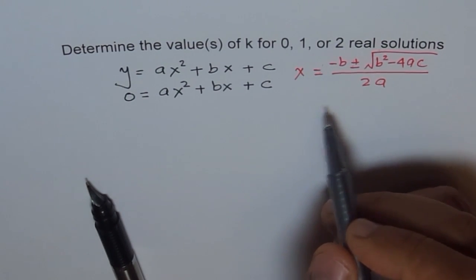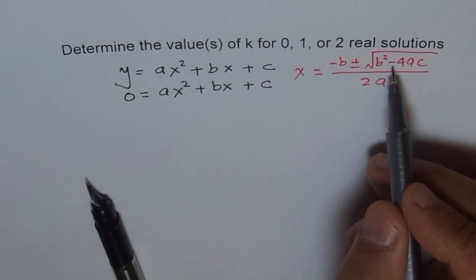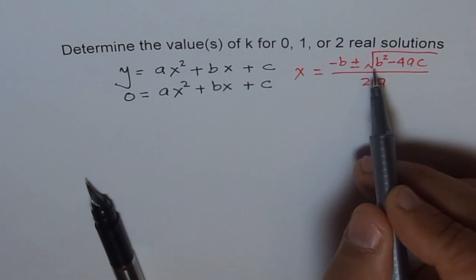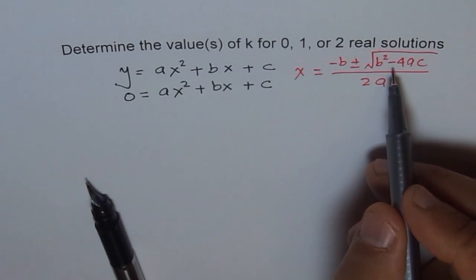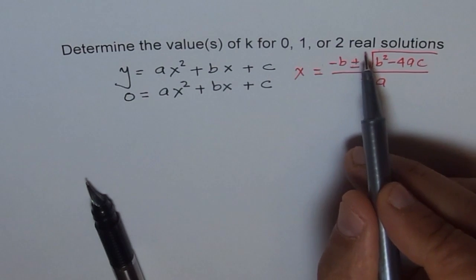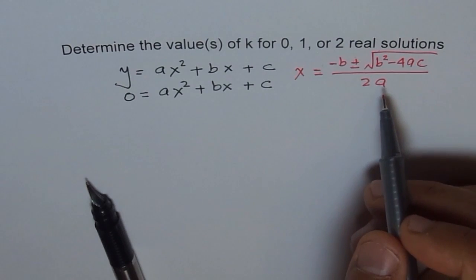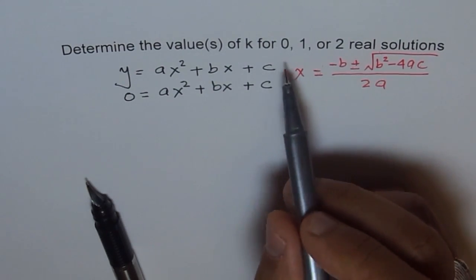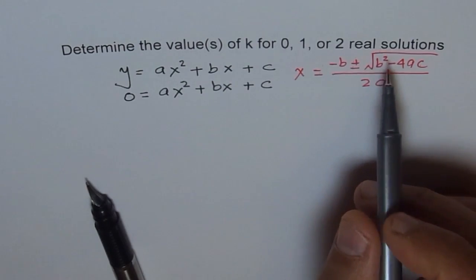But if b squared minus 4ac is negative, then under the radical we have a negative term, and the square root of a negative number is not defined in the domain of real numbers. So we don't have a real solution. That leads to the number of solutions we are talking about.